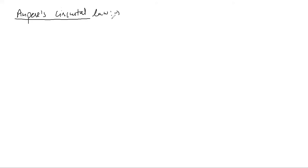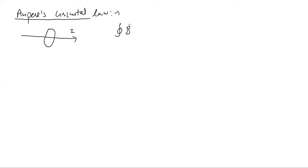Let's start the class. In the last class we stopped at Ampere's Circuital Law. If you have a current-carrying wire, you can draw an Amperian loop of any shape which basically encloses this wire. This law states that there will be a magnetic field produced, and for that magnetic field if you take the line integral over this closed path, that would be equal to mu times i.